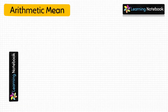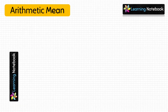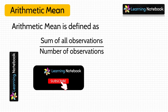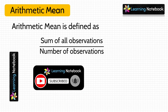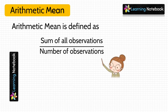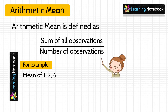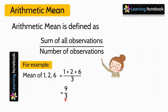Let's first understand what is mean, or arithmetic mean. It is defined as the sum of all observations divided by the number of observations. For example: 1 plus 2 plus 6 divided by 3 — since 1 plus 2 plus 6 equals 9, and 9 divided by 3 equals 3, the mean of 1, 2, and 6 is 3.